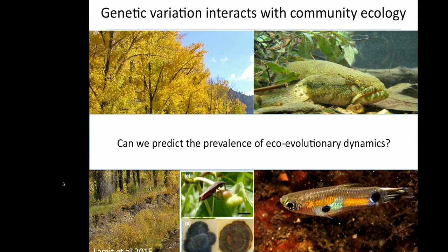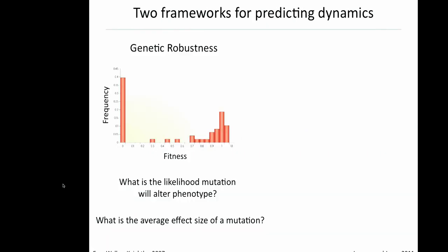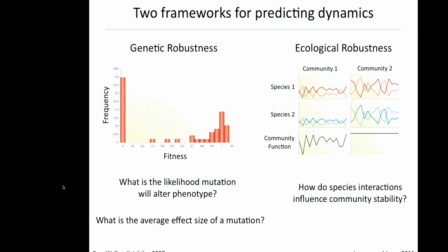The exciting next question is to ask: can we predict the prevalence of these interactions between ecology and evolution? There have been two archetypal bodies of literature which have addressed this. There's been great work looking at the effects of genetic robustness — for example, looking at the distribution of fitness effects, much like we just saw from Roy's work — asking what is the likelihood that a mutation will affect a phenotype, and what is the average effect size. In parallel, there's been fantastic work looking at ecological robustness, asking how species interactions influence the stability of emergent community properties.